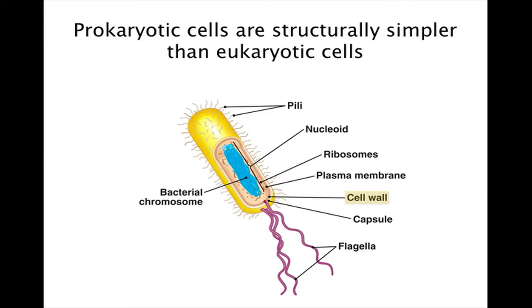In some prokaryotes, another layer — a sticky outer coat called a capsule — surrounds the cell wall and further protects the cell surface. In addition to capsules, some prokaryotes have surface projections. Short projections, called pili, help attach prokaryotes to surfaces, while longer projections, called flagella, may propel the prokaryote cell through its liquid environment.